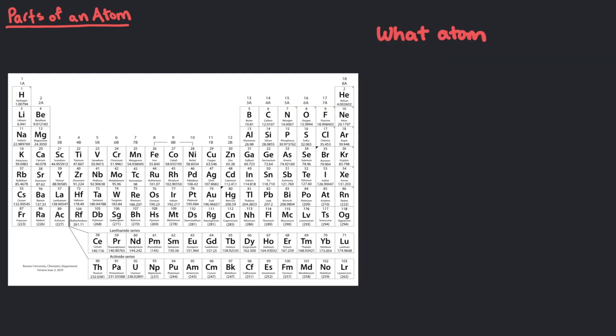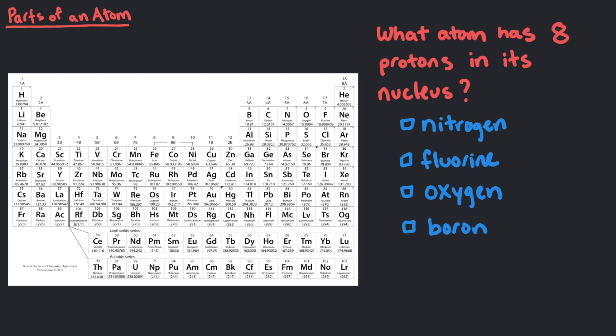What atom has 8 protons in its nucleus? That's right! Looking at the atomic number written above the element symbol on the periodic table, oxygen has 8 protons in its nucleus.